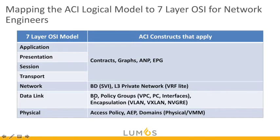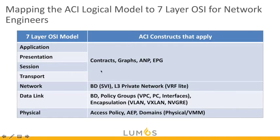On the data link layer, we have bridge domains, policy groups such as VPCs, port channels, and individual interfaces, plus encapsulations like VLAN and VXLAN. On the network side at layer three, we have bridge domains and the SVIs on those bridge domains — the pervasive SVI — as well as layer three private networks, also known as contexts or VRFs, which operate like VRF-lite. From layer four through seven in ACI, we have contracts, graphs, application network profiles, and EPGs.